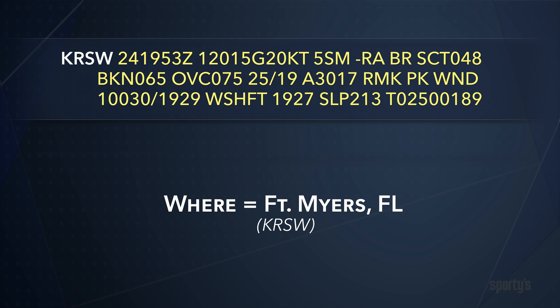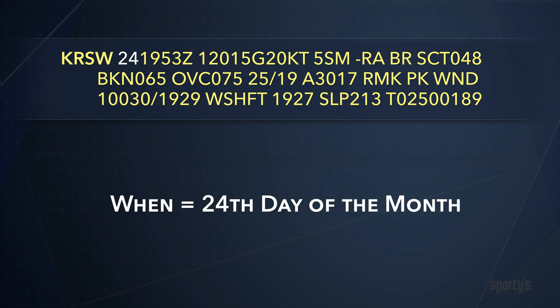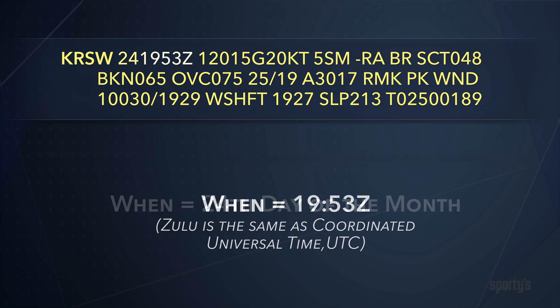Where is Fort Myers, Florida? Identifiers for airports in the contiguous 48 states are preceded by the letter K. When is the next group? The first two digits are the day of the month — the 24th for this report. The time the observation was taken was 1953 Coordinated Universal Time, also called Zulu or UTC time, which is covered later in this course.